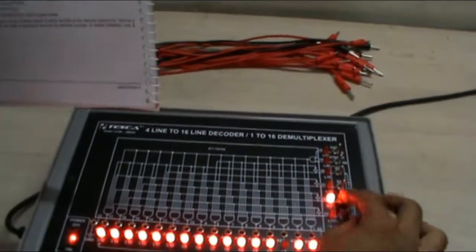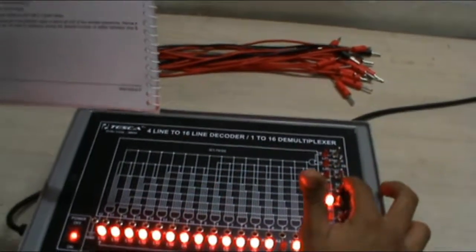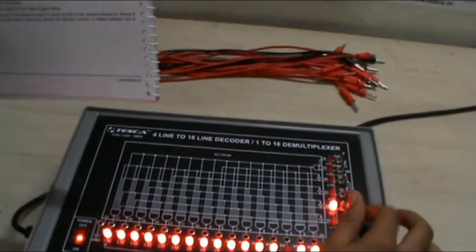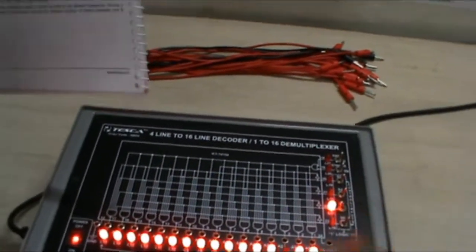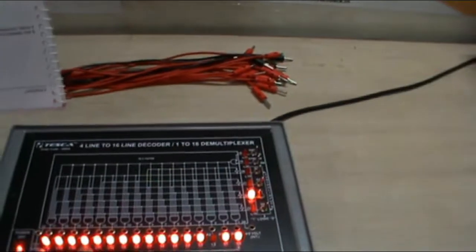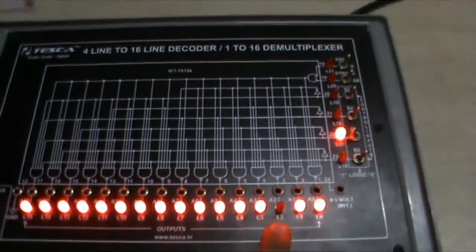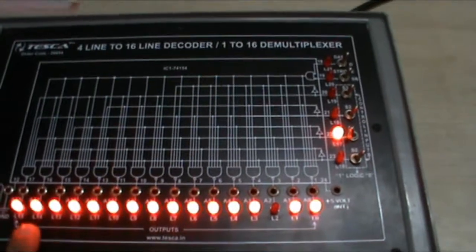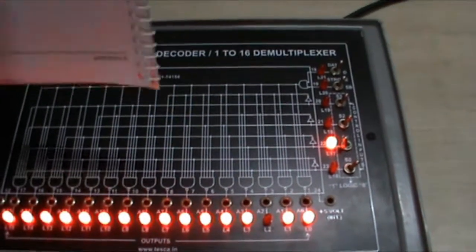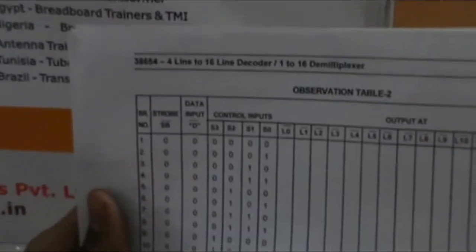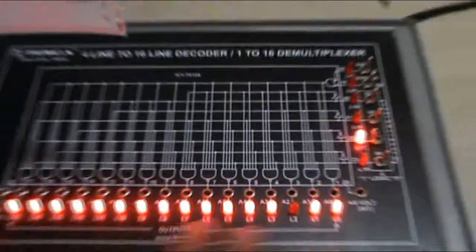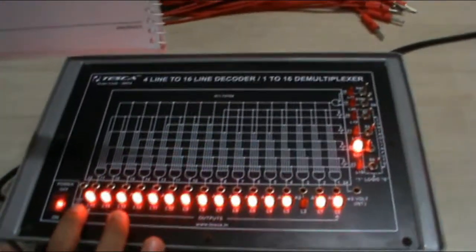If my input is 2, that is 0010 in binary, which converts to decimal 2, then this is my output in which L2 is off and rest all are glowing. Similarly take all the readings from 0000, that is decimal 0, to 1111, decimal 15. Take all the readings and record the output of the LEDs. That completes the second experiment.